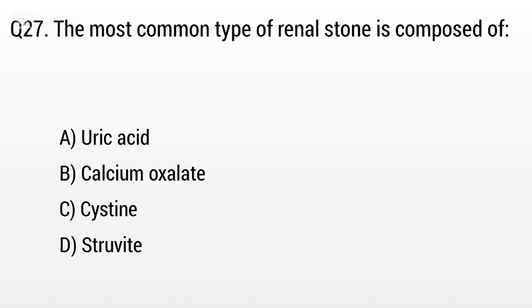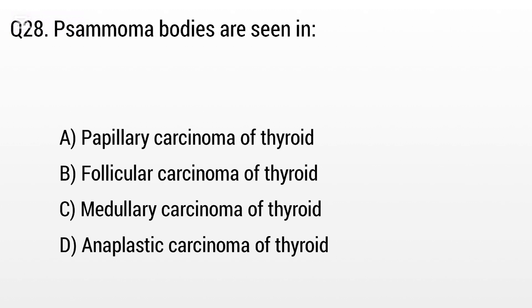Question 27. The most common type of renal stone is composed of: Option A: Uric acid, B: Calcium oxalate. But the right answer is Option B: Calcium oxalate.